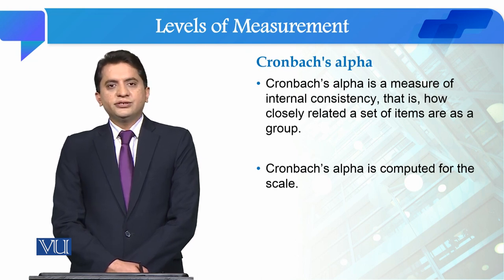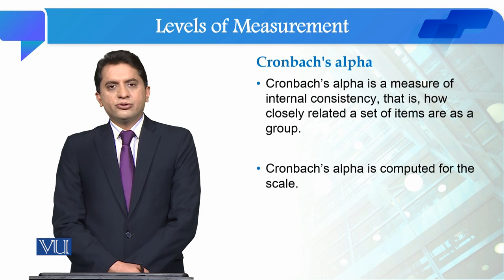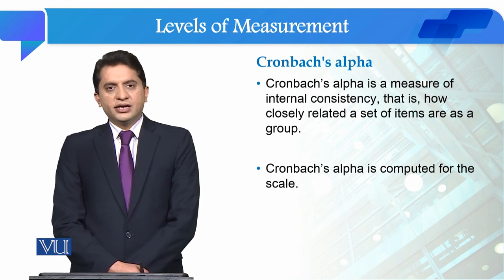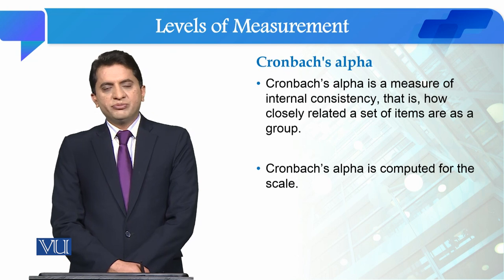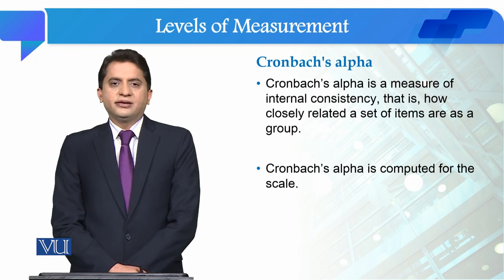What is internal consistency? If we compute Cronbach's Alpha, then we will compute it over all 21 items. We will decide whether the scale we have used in our study is reliable or not.